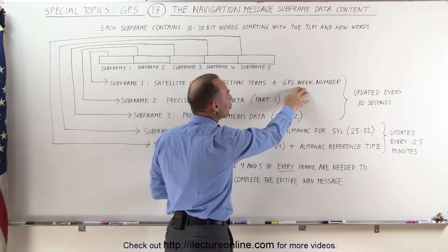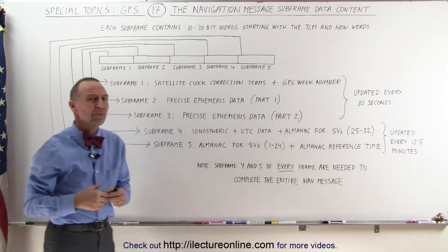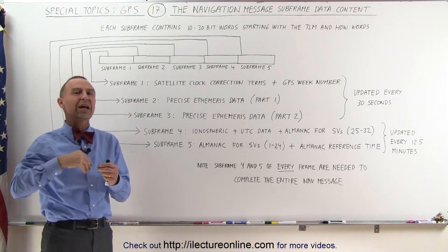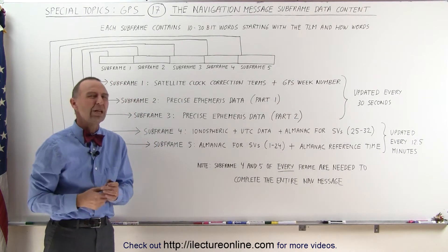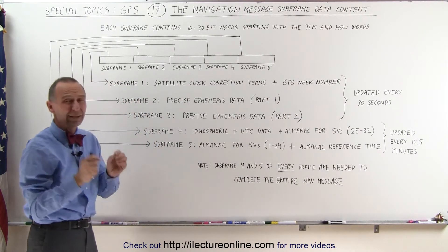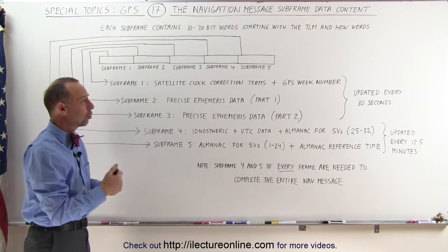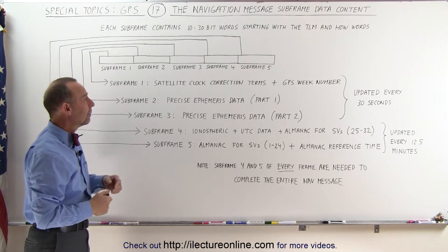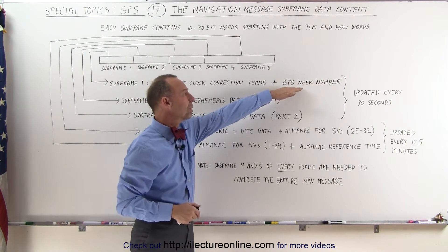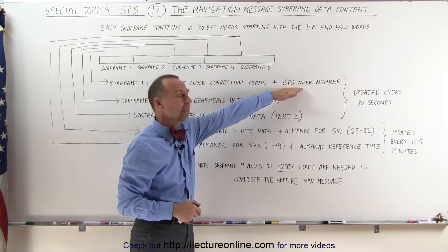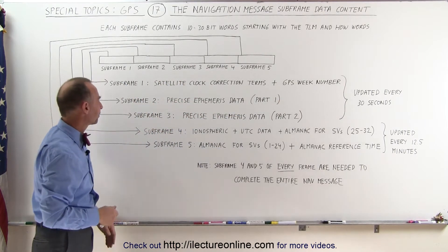We need to be updated with those correction terms in order to get a better precise location of the receiver. Subframe 1 also contains the GPS week number, which cycles through every about 20 years or so, indicating what week we are in for the GPS system.